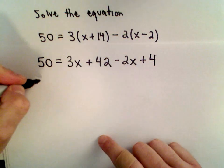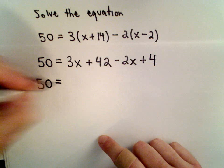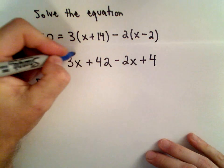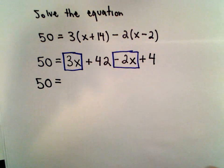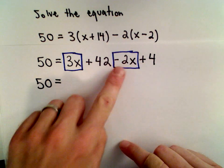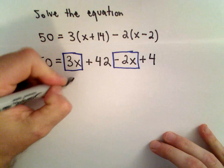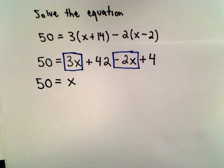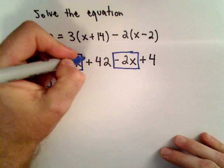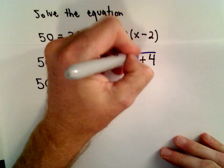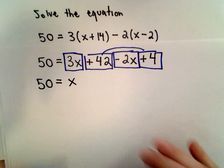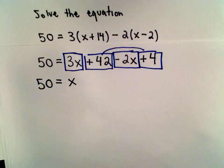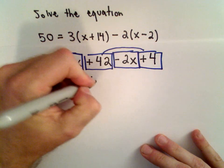All right, so now I see some like terms on the right-hand side. I've got this term of 3x, and then I also have this term of negative 2x. So if I do 3x minus 2x, that's going to leave me with positive 1x. Likewise, I've got positive 42 and a positive 4. Well, 42 and 4, if we add those together, 42 plus 4, that's going to give us positive 46.